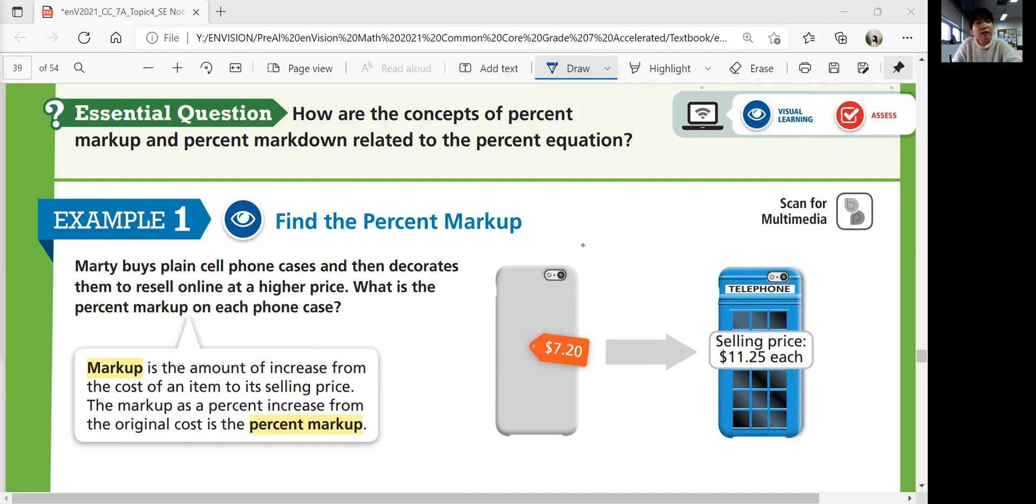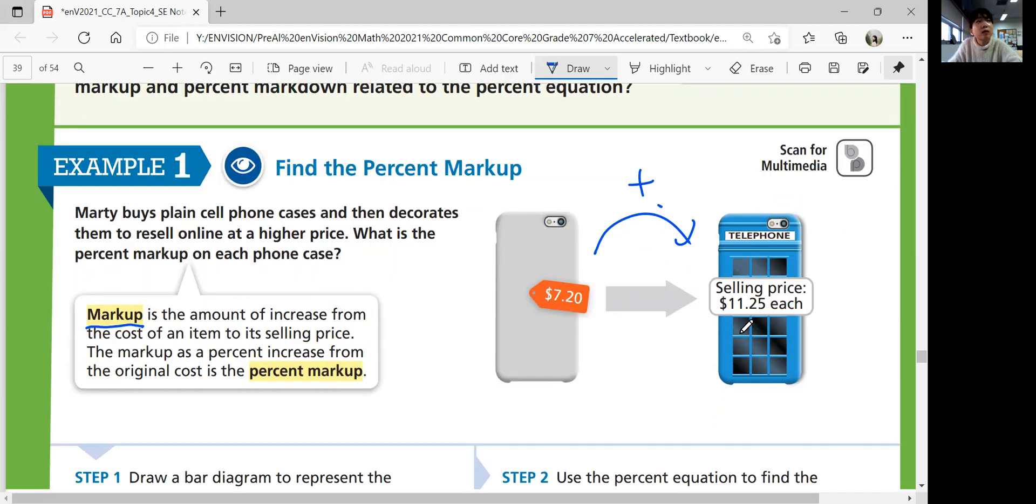This is what she bought, $7.20, and then she's selling her decorated phone case for $11.25 each. That is called a markup. If you mark the price up, you're adding to the price. Markup is the amount of increase from the cost of an item to its selling price. The markup as a percent increase from the original cost is the percent markup.